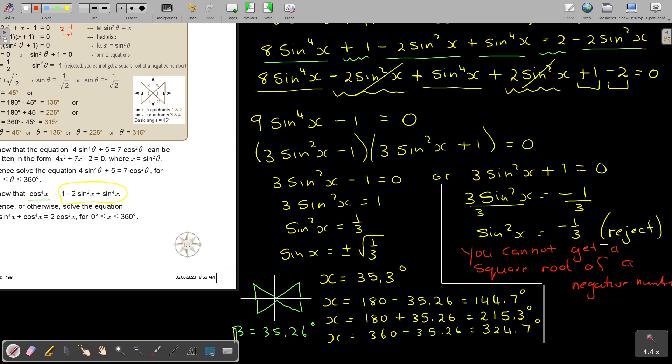So let's just say, like, sin squared x equals negative 1 over 3, and then you stop. Because, what will you say? You reject. I'm going to write it in red. You cannot get a square root of a negative number. You don't have to write this. You can just say reject. And your final answers will just be that 35.3 degrees, 144.7 degrees, 215.3 degrees, and 324.7 degrees. And that's how you do it.